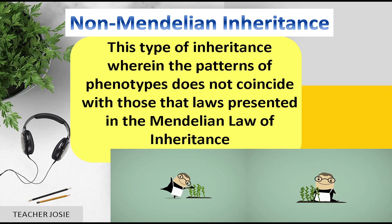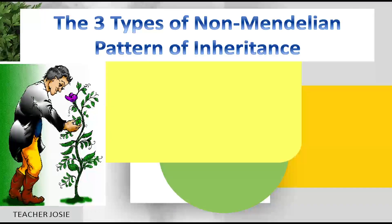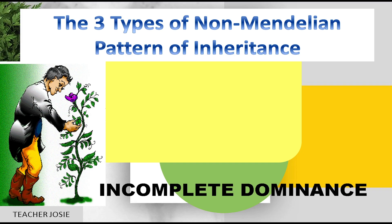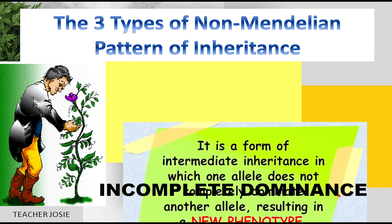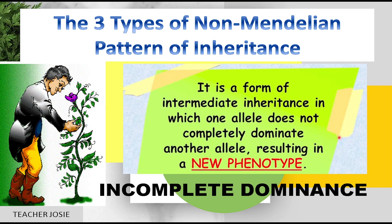Non-Mendelian inheritance is a type of inheritance wherein the patterns of phenotypes do not coincide with those presented in the Mendelian law of inheritance. Now let us discuss the three types. The first type is incomplete dominance — it is a form of intermediate inheritance in which one allele does not completely dominate another allele, resulting in a new phenotype.